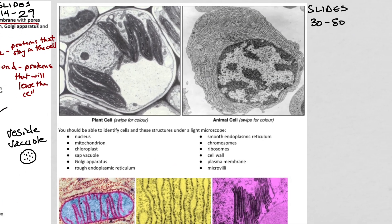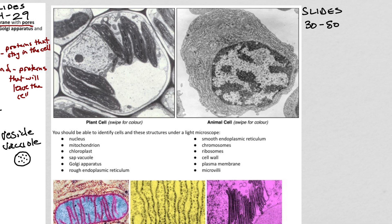You do have to know how to identify a lot of these structures under an electron microscope. These are all found on slides 30 through 50 — it seems like a lot of slides, but that's because there's one slide for every single one of these organelles so you can really get a good idea of what it looks like up close, since sometimes you can't see them in a big electron micrograph of the whole cell.